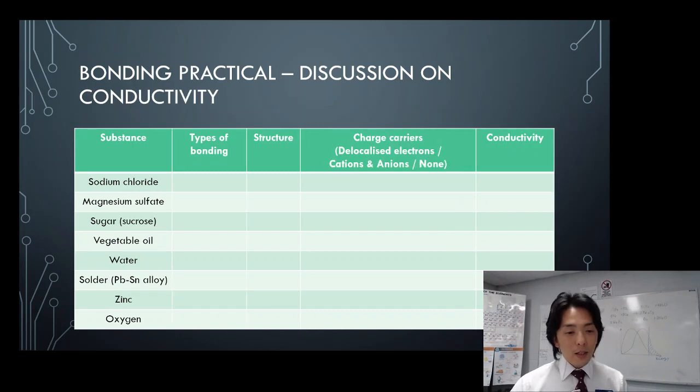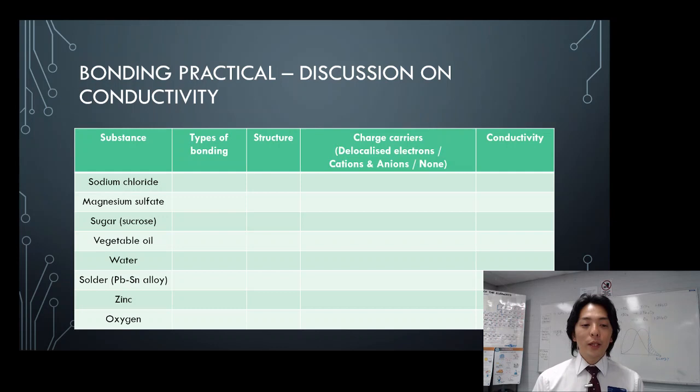And next discussion would be conductivity. Now that you have worked out the types of bonding and also structure, you can then work out what sort of charge carriers are available. So when you look at the conductivity, electrons that get sent out from the external source, like power pack, need to be carried somehow.